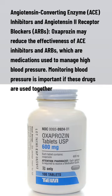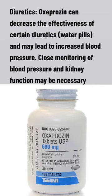ACE inhibitors and Angiotensin II Receptor Blockers (ARBs): Oxaprozin may reduce the effectiveness of ACE inhibitors and ARBs, which are medications used to manage high blood pressure. Monitoring blood pressure is important if these drugs are used together. Diuretics: Oxaprozin can decrease the effectiveness of certain diuretics (water pills) and may lead to increased blood pressure, so close monitoring of blood pressure and kidney function may be necessary.